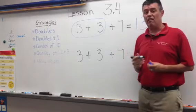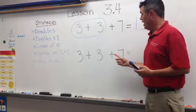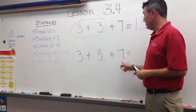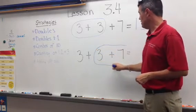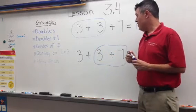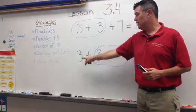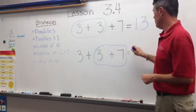Then they have to think of another way that they can solve that problem. Well, I can also say 3 plus 7 is one of my combos of 10. So I might circle 3 plus 7, and then I'm only doing 10 plus 3. And that will also give me 13.